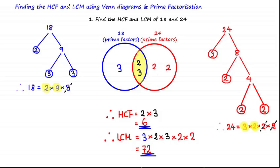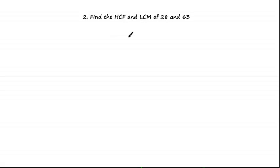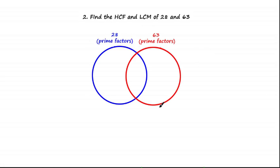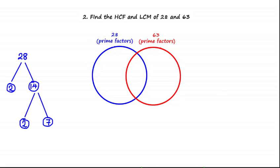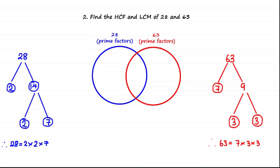Let's look at another example: find the highest common factor and the lowest common multiple of 28 and 63. Using the method of Venn diagrams together with prime factorization, we need to complete the Venn diagram, which means finding the prime factors of 28 and 63. Using the factor tree method, 28 equals 2 times 2 times 7, and 63 equals 7 times 3 times 3.